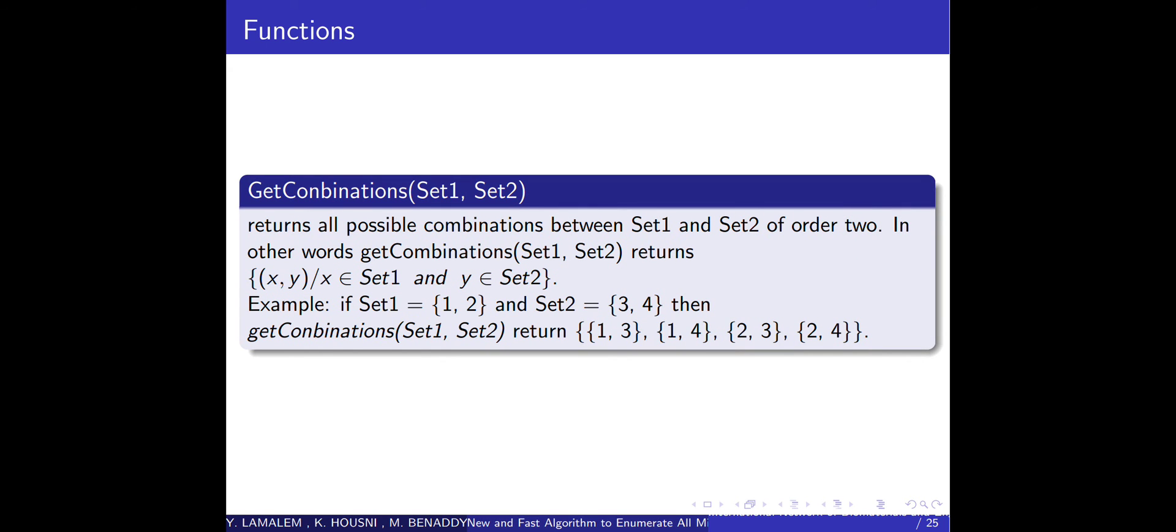Then we have the last function called getCombination that accepts two sets, set1 and set2. It returns all possible combinations between set1 and set2 in order of order 2. For example, if set1 contains nodes number 1 and number 2 and set2 contains node number 3 and number 4, then the possible combinations are a set that contains number 1 and number 3, a set that contains number 1 and number 4, a set that contains number 2 and number 3, and a set that contains number 2 and number 4.